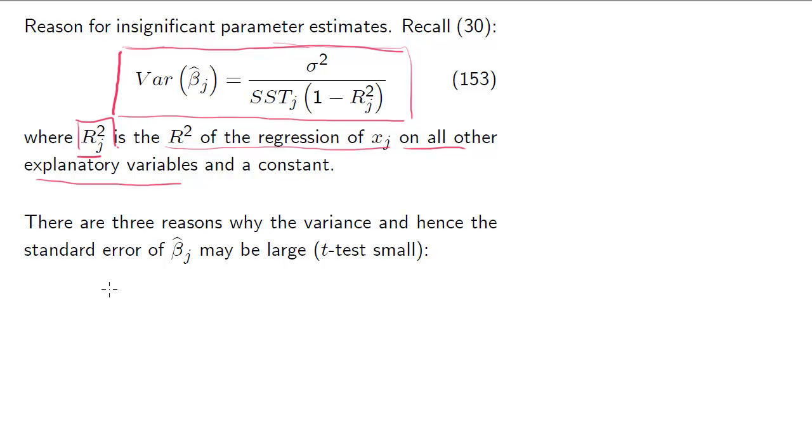So there could be three reasons why we have very high standard errors or high variances, and therefore high standard errors. Let's start with reason one. There are three terms on the right-hand side of this. Firstly, let's look at the numerator term. We have large sigma squared. The model just doesn't fit the data well. Large variance of error terms.